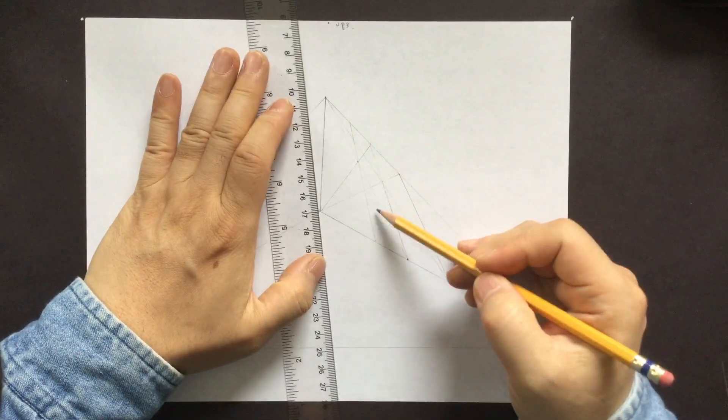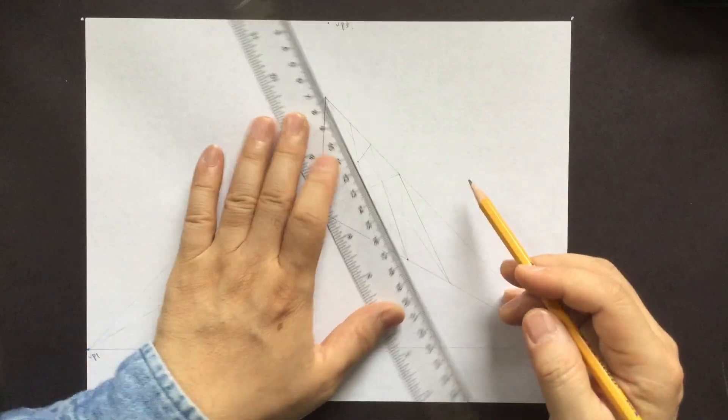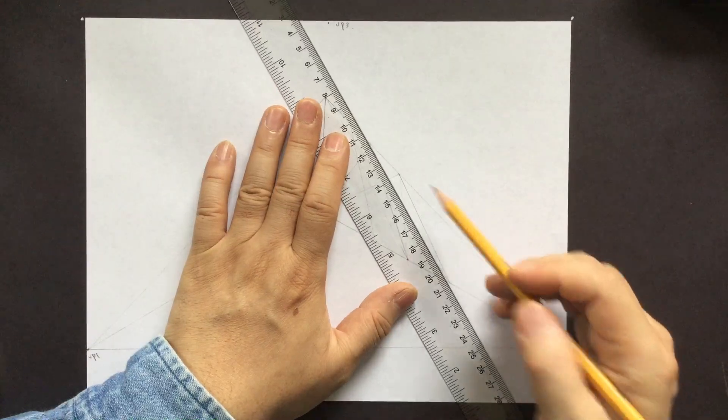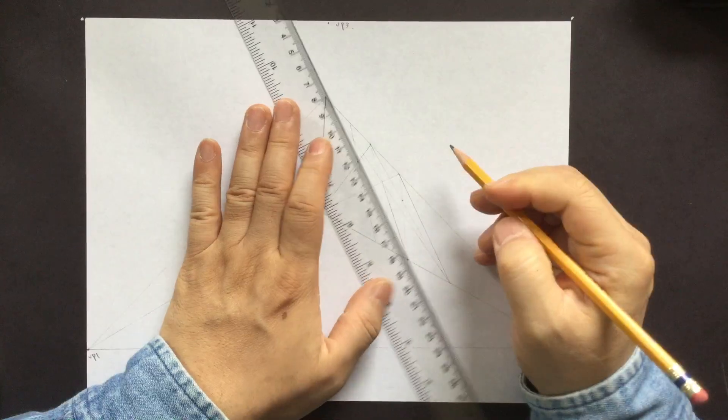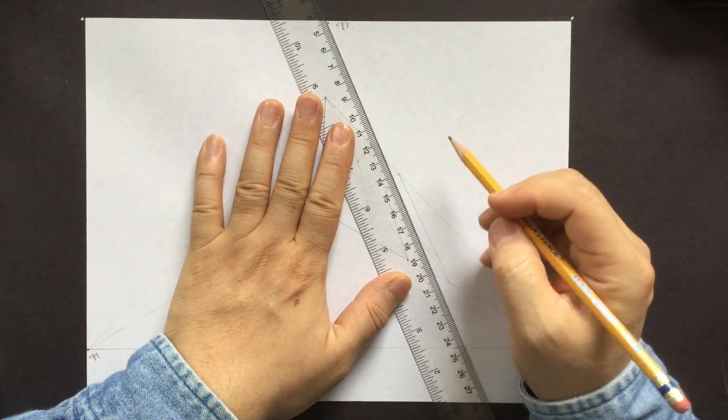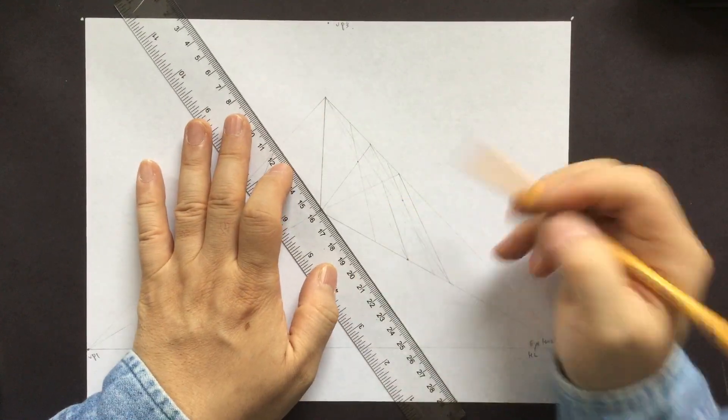And now we have two columns established. So first column, second column. Now here, we need to create another X point to find the center. This is the center. And we connect that. So one, two, three, four. See how the thickness gets reduced.